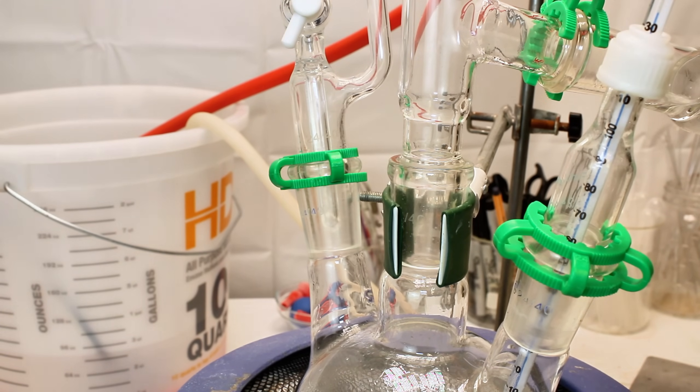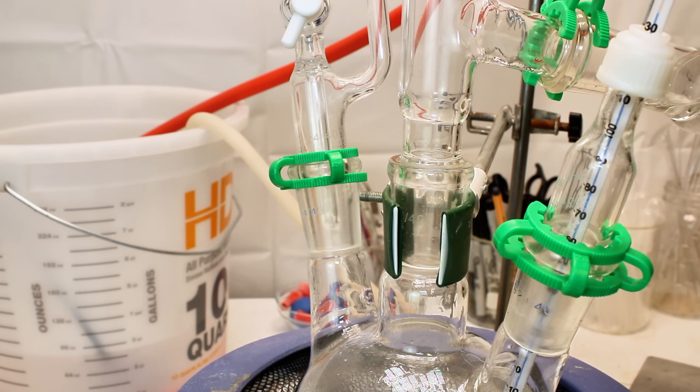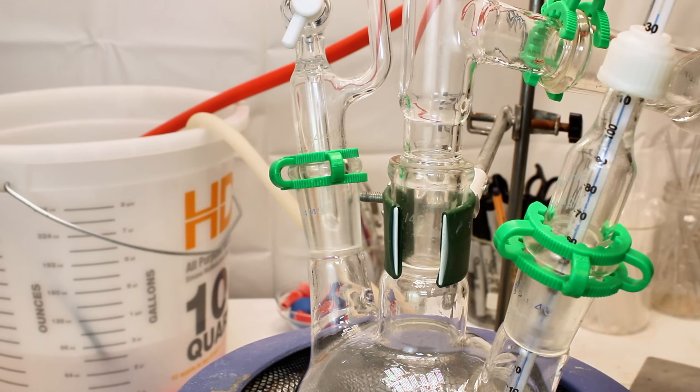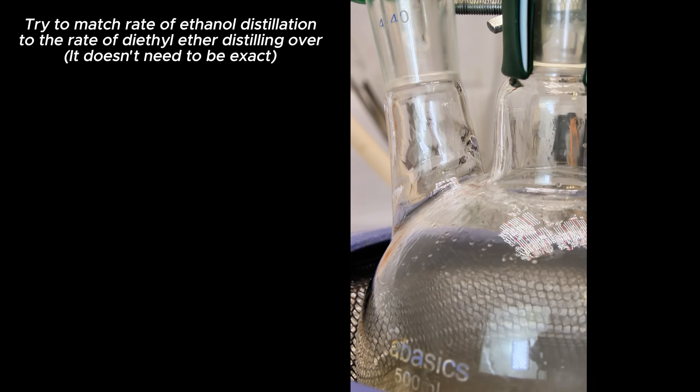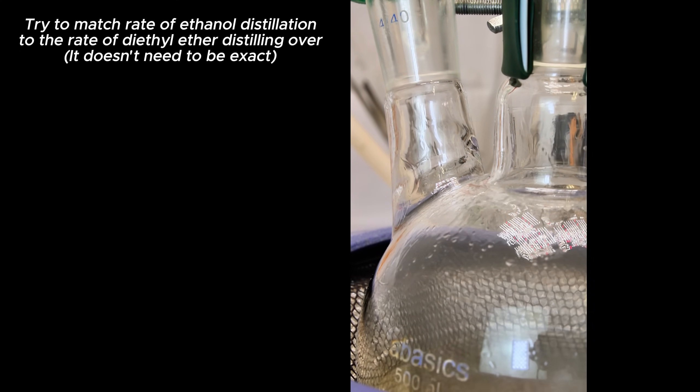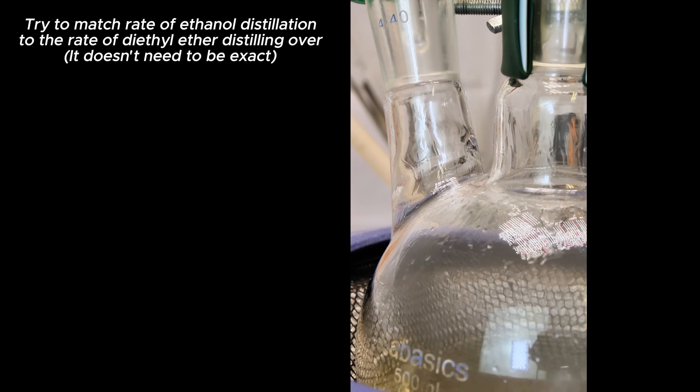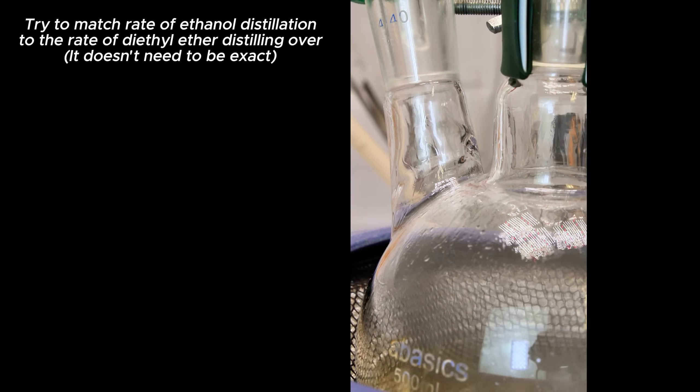As soon as the temperature reaches 130 degrees celsius and ether begins to distill over, I open the stopcock just enough that it allows ethanol to drip into the reaction mixture at roughly the same rate that the ether is distilling over. This is very tough to maintain though, so I periodically adjust the heating mantle and drip rate as the distillation speeds up or slows down.